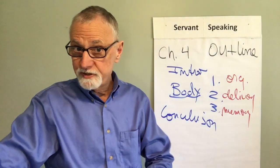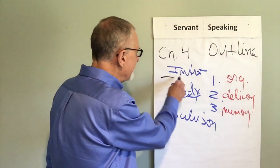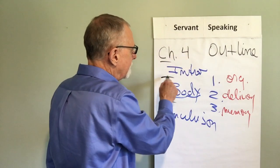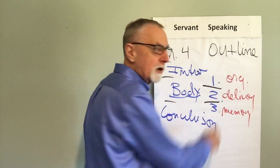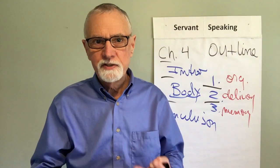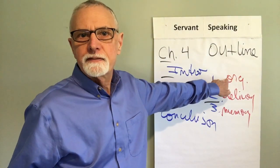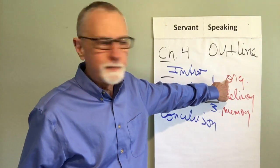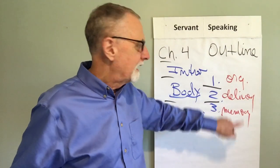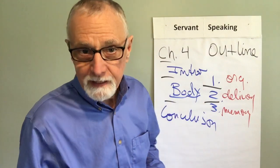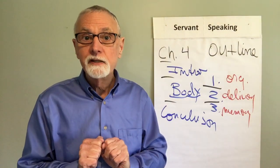We need one other thing that can really help us in the outline. Between these points — from the introduction to the body, the body to the conclusion, and between the points within the body — we need transition statements. We need transitions so the audience knows how we're moving along. For example: the first benefit of doing an outline well is that it helps organize our speech; a second benefit is it helps with delivery; and the third benefit is it helps with memory. That's a simple way, though not the only way — I discuss other methods in the book — to make the point about what we need to do with an outline.